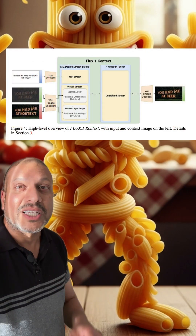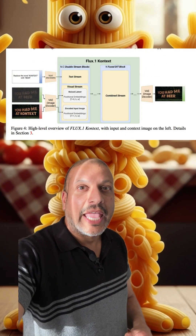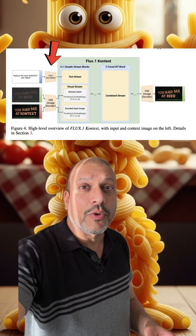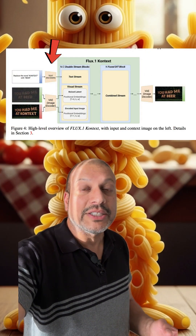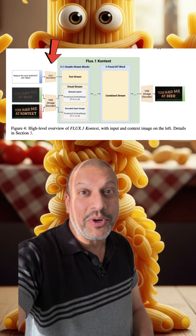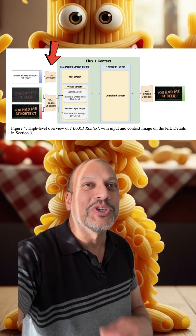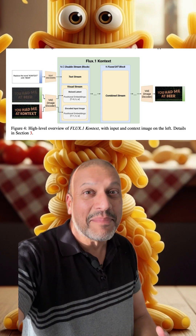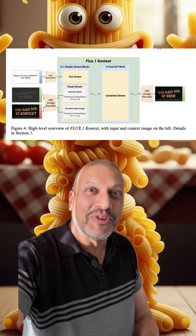Another smart part is the conditioning. With only tokens from the text encoder, Flux generates. Add tokens from the encoded input image and you can use it for editing. The same backbone handles different inputs.